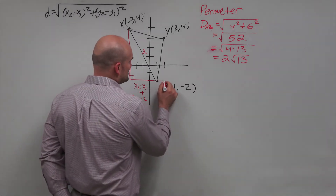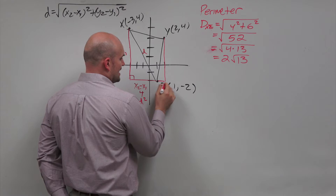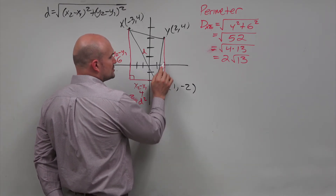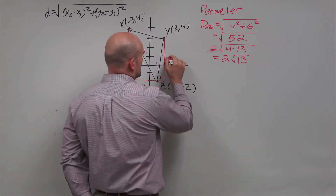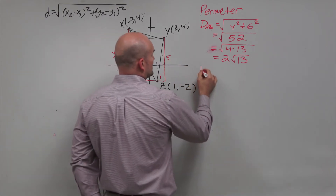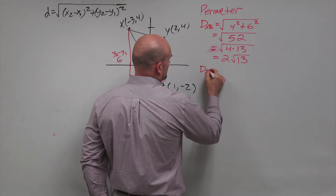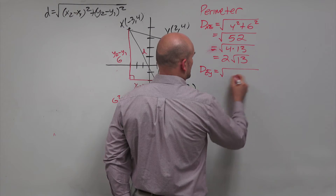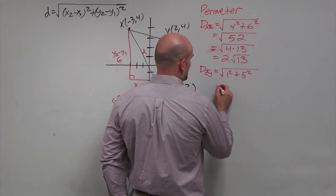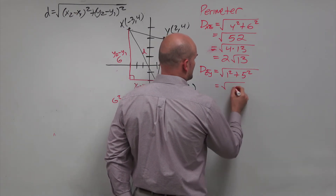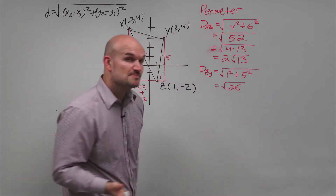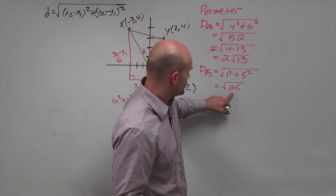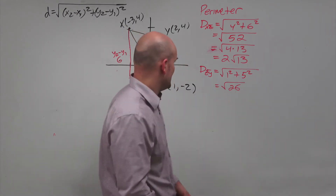Now for the next sides, the horizontal distance is 1 and the vertical distance is 5. So the distance zy is going to be the square root of 1 squared plus 5 squared, which equals the square root of 26. Unfortunately, in this problem I can't really take out any square numbers, so I'm just going to leave it as the square root of 26.